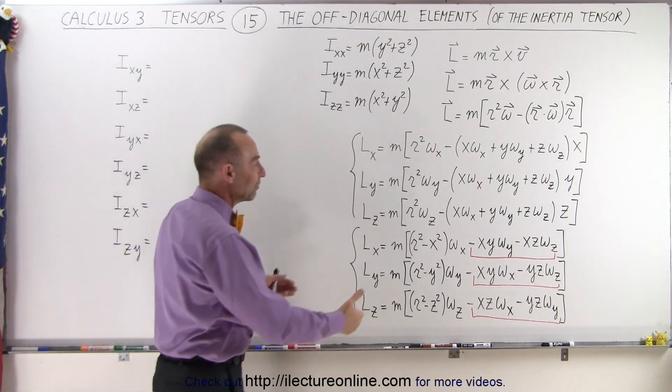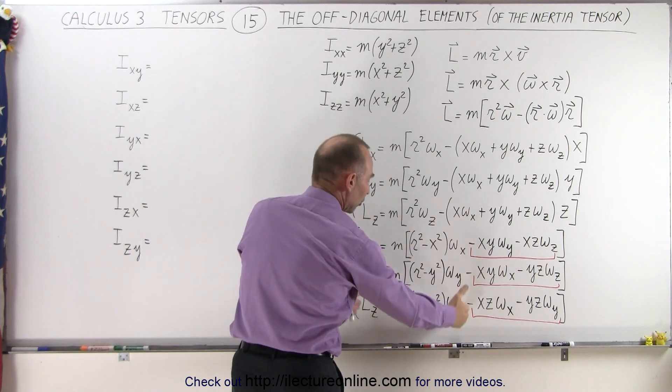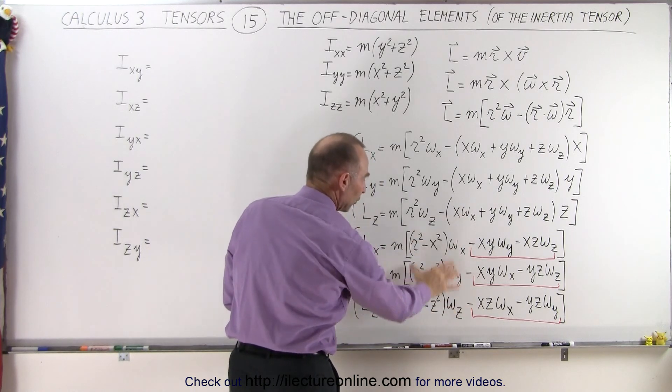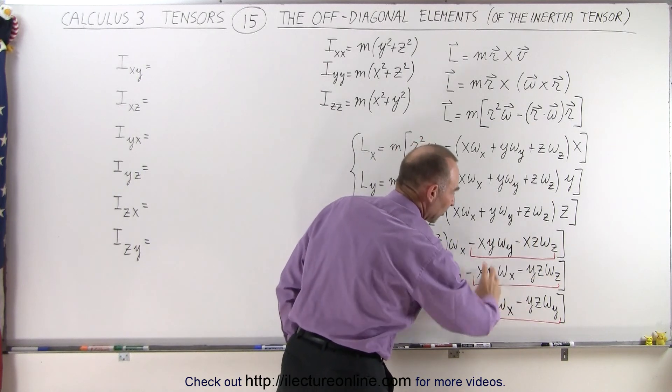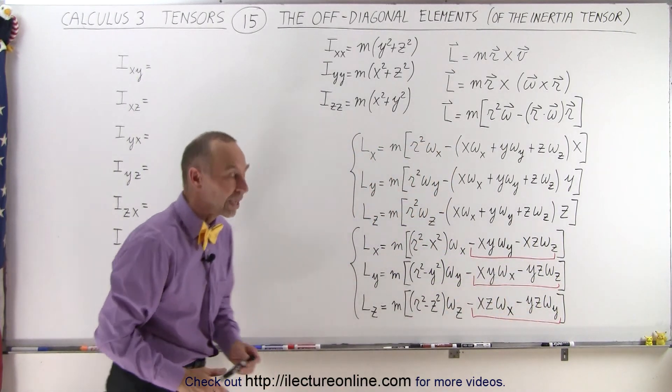And we derived in the previous video the diagonal element terms which came from this portion of those equations. Now we're going to look at these portions of the equations which represents the six off-diagonal elements.